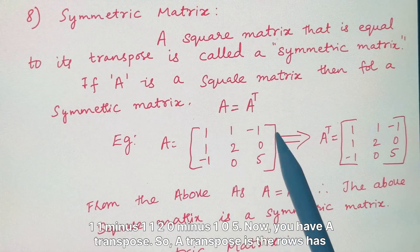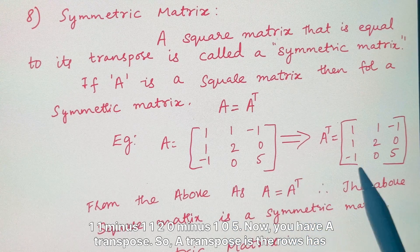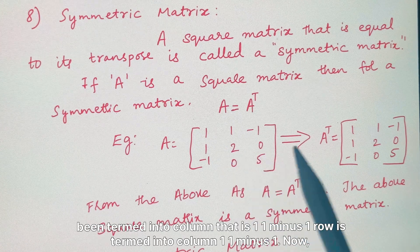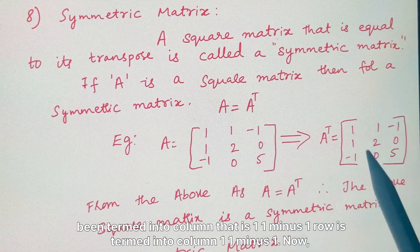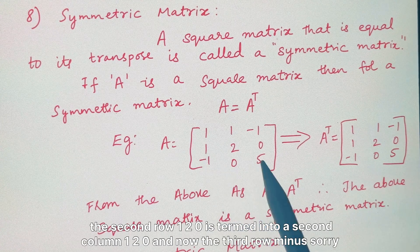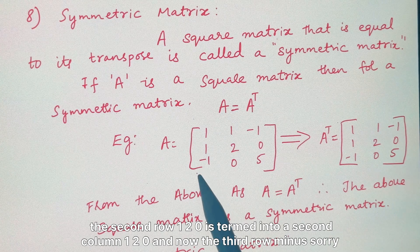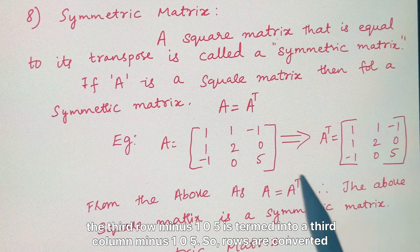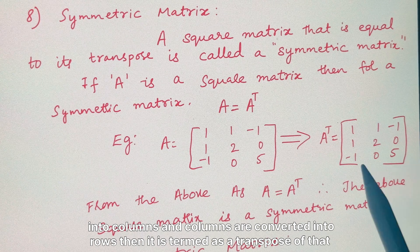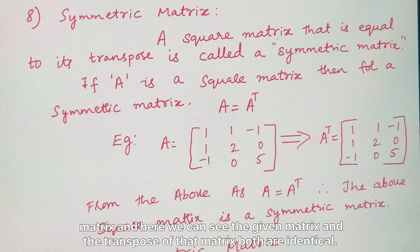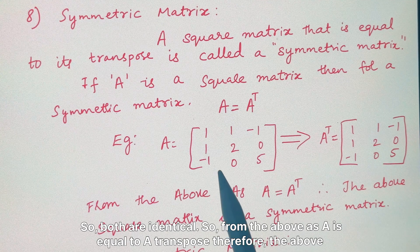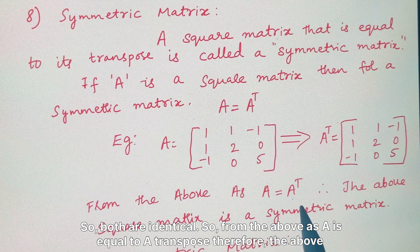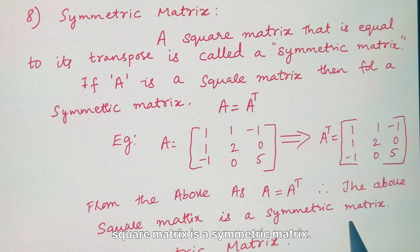For example, A = [1 1 -1 / 1 2 0 / -1 0 5]. The transpose A^T is formed by converting rows into columns: first row [1 1 -1] becomes the first column, second row [1 2 0] becomes the second column, and third row [-1 0 5] becomes the third column. Since A equals A^T, the matrix is symmetric.